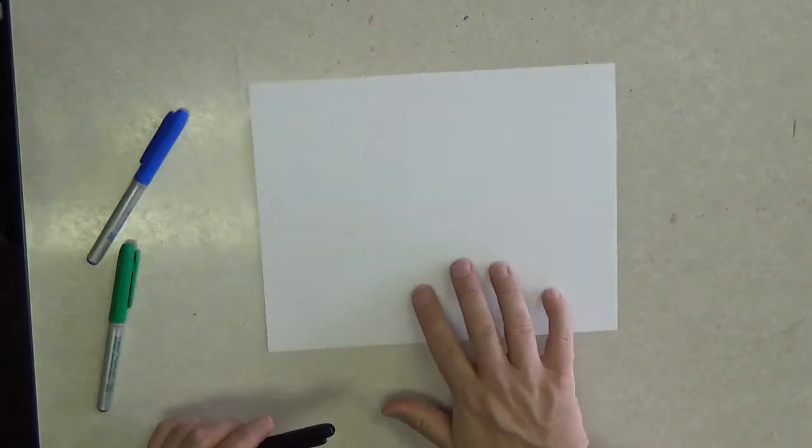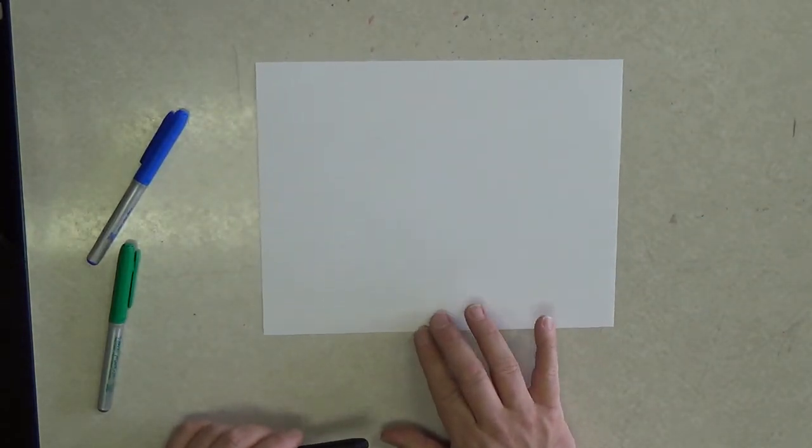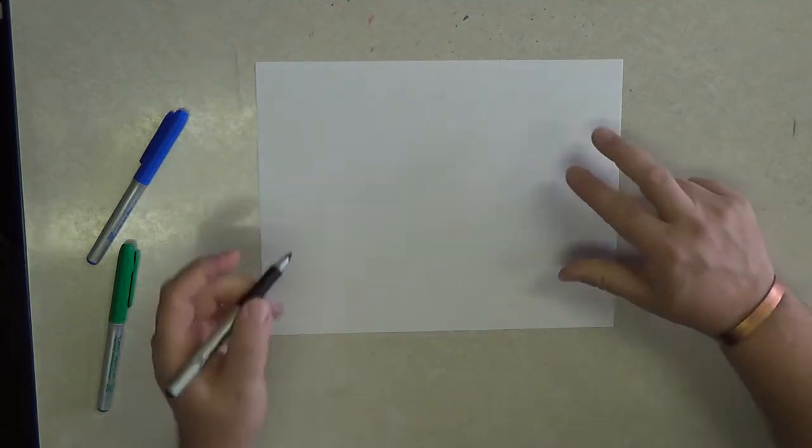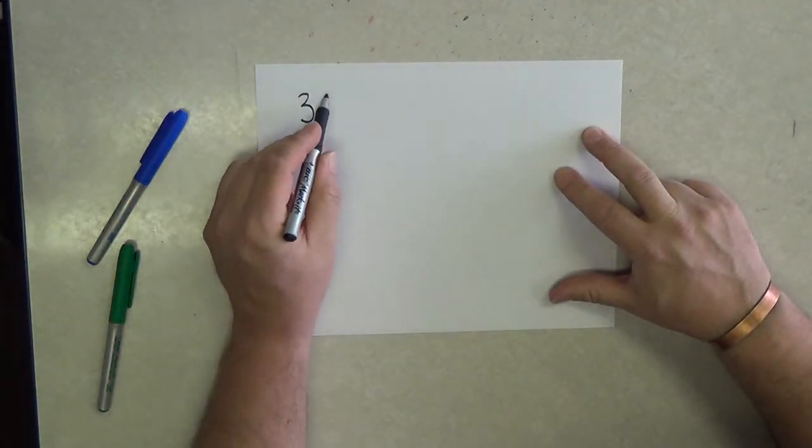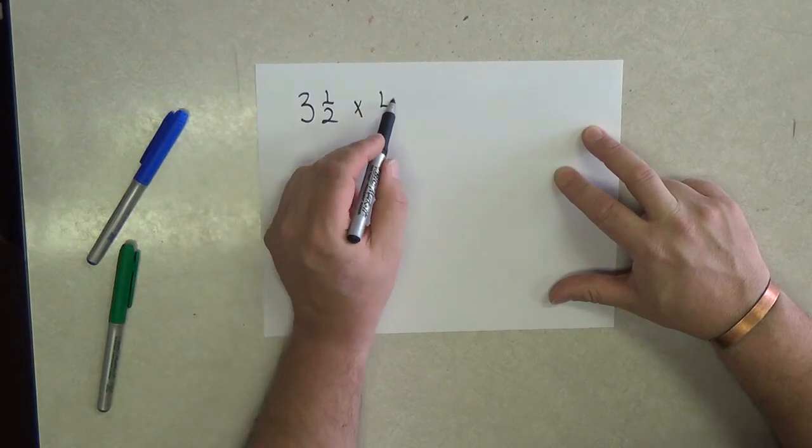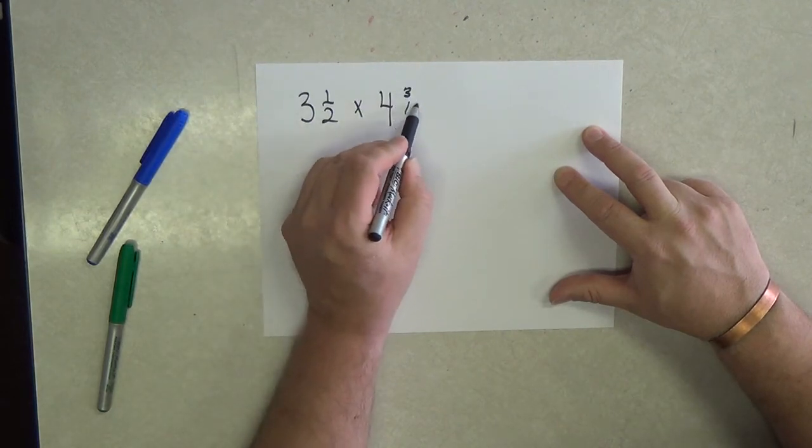So what we're going to do is we're going to do the same problem but this time we're going to look at how we can do this problem efficiently but yet without making the numbers too complicated. So our problem was 3 and 1 half times 4 and 3 fourths.